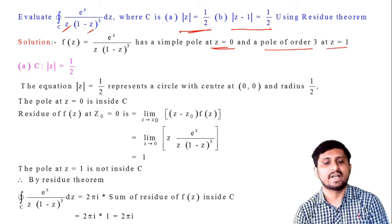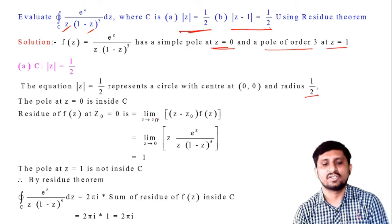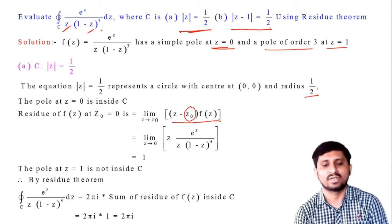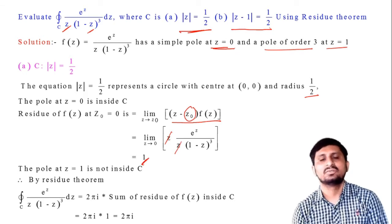For the circle |z| = 1/2, this represents a circle with center (0,0) and radius 1/2. So the pole at z=0 is inside C. The residue of f(z) at z=0 is: limit as z→0 of z · [e^z / z(1−z)³]. The z cancels, and substituting z=0 gives e^0 / (1−0)³ = 1. So the residue at z=0 is 1.